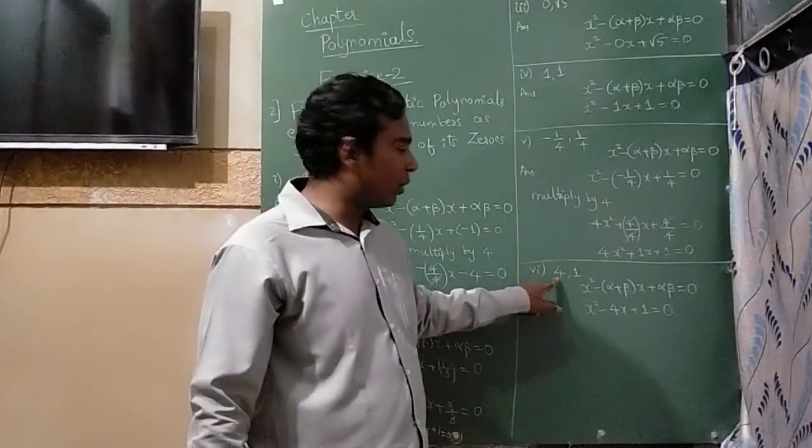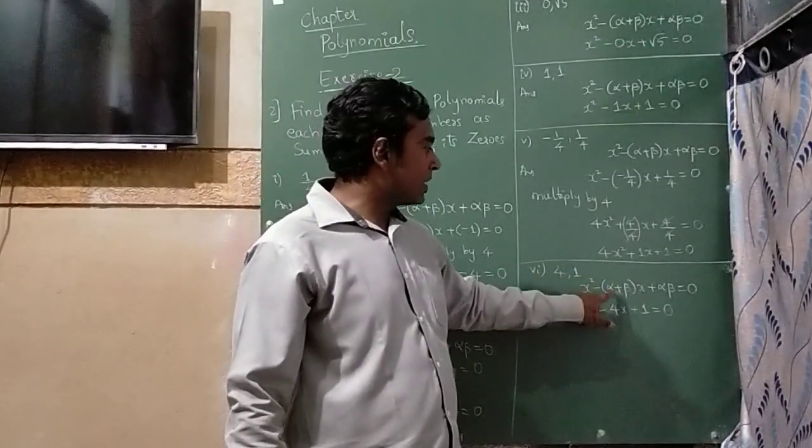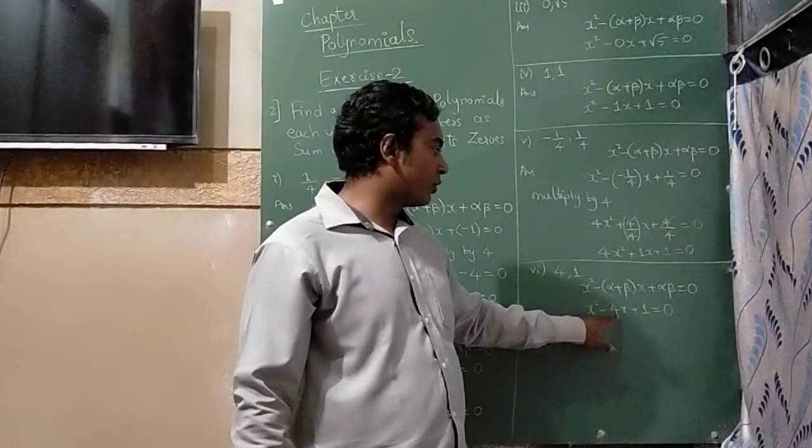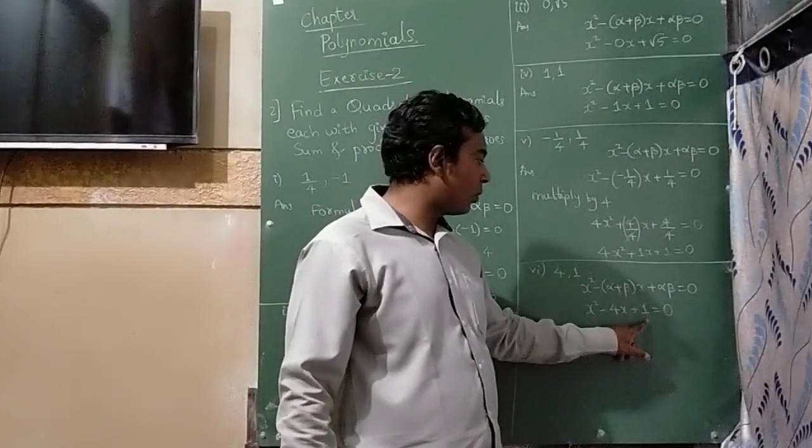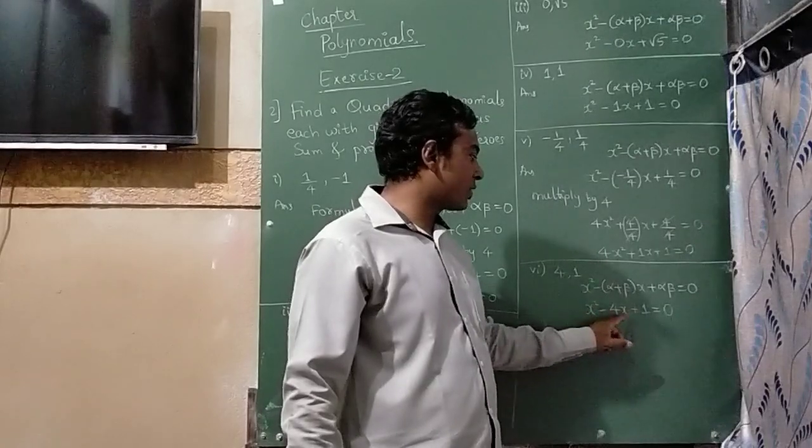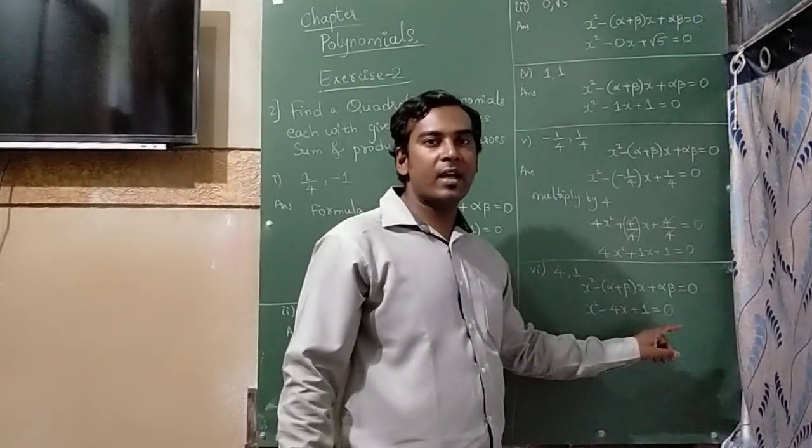Last question, you have sum as 4 and product as 1. In place of α+β, I will substitute 4. In place of αβ, I will substitute 1. So I will get x² - 4x + 1 = 0 as the answer.